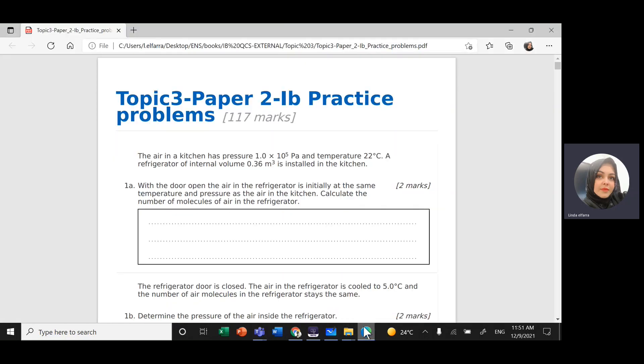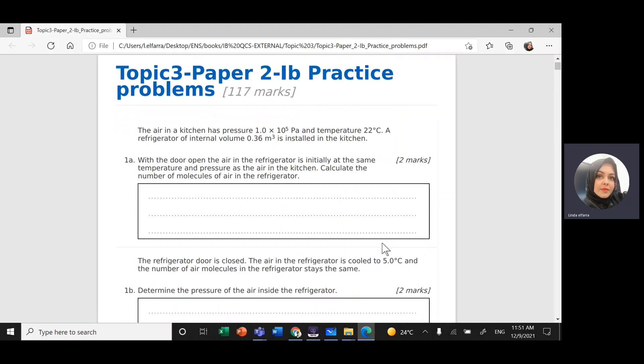Let's go to question 1a. The air in a kitchen has pressure 1 times 10 to the power 5 Pascal and temperature 22 degrees Celsius. A refrigerator of internal volume 1.36 meter cube is insulated in the kitchen with the door open. The air in the refrigerator is initially at the same temperature and pressure as the air in the kitchen.